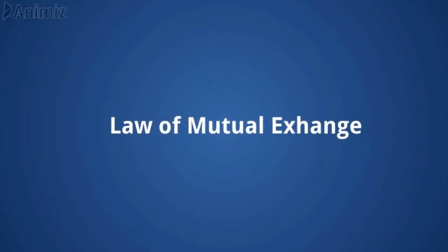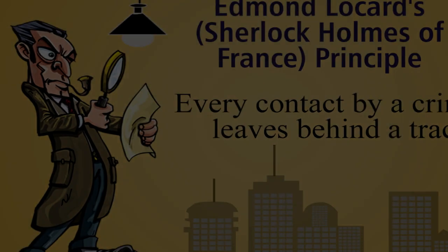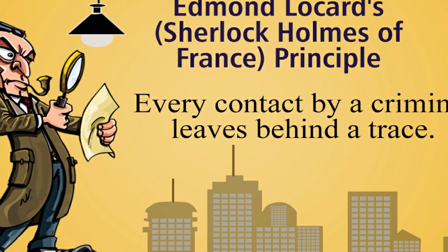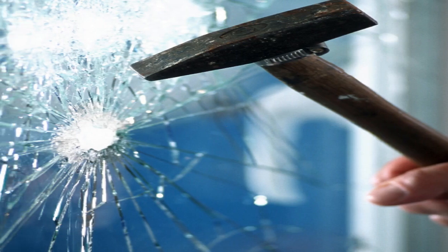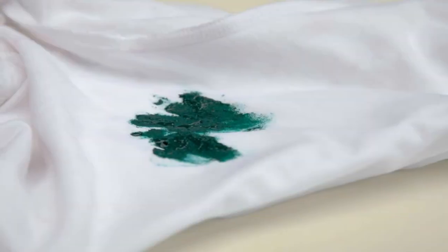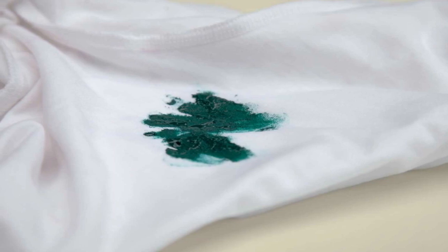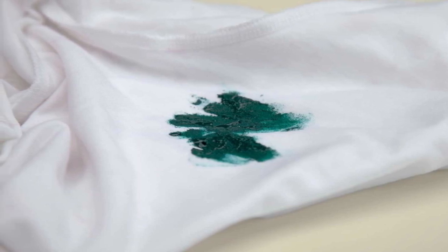2. Law of Mutual Exchange — this law was given by French scientist Edmond Locard. It states that whenever two things come in contact, they leave traces. For example, if a criminal breaks a window or a door using any instrument, it leaves its marks on the door frame. Also, fragments of paint or wood get transferred to the instrument or to the clothes of the culprit.